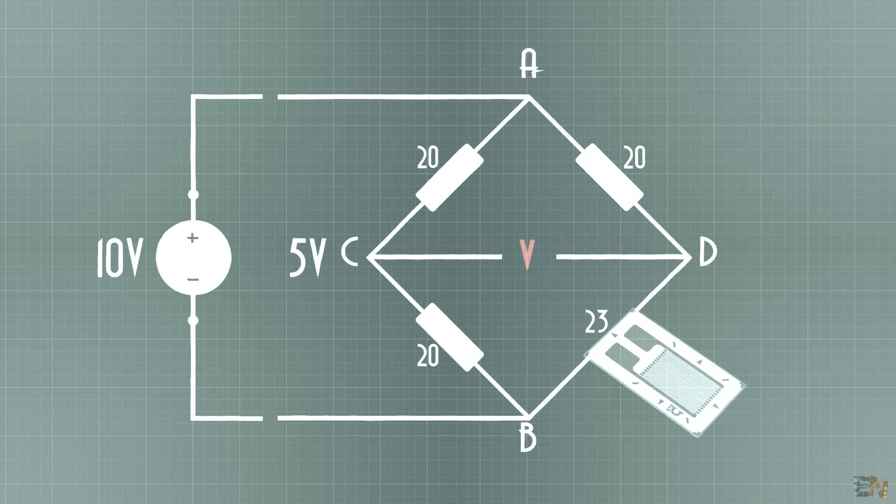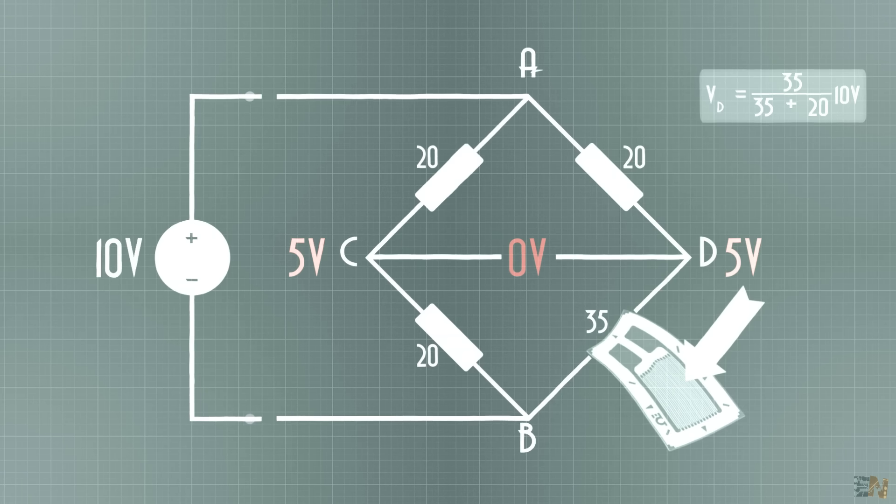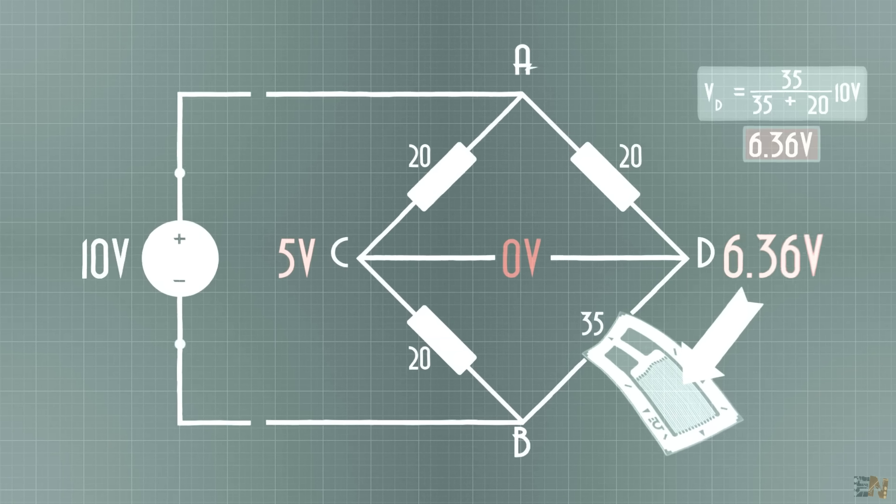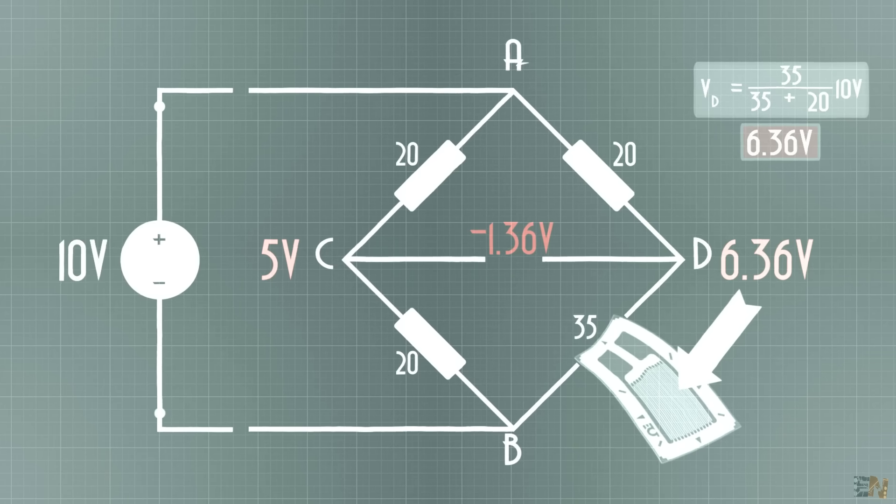Right now the bridge is balanced, so we have CD equal to zero volts. Now we apply force on the gauge, so the resistance is getting bigger, so the voltage drop on the gauge is now bigger as well. Let's say that the gauge is now 35 ohms. So the voltage on point D would now be 6.36 volts. So the voltage between C and D is negative 1.36 volts.